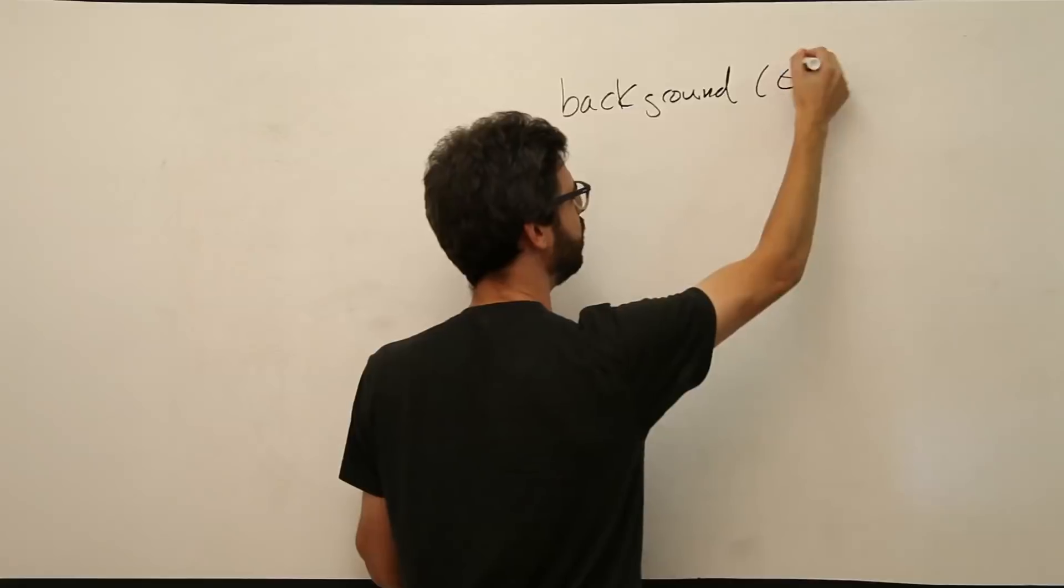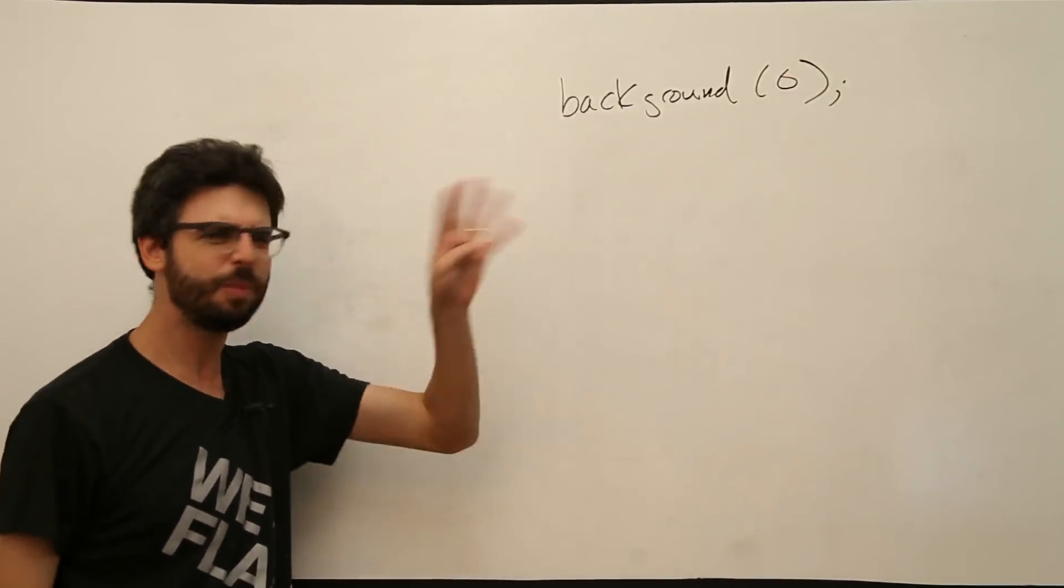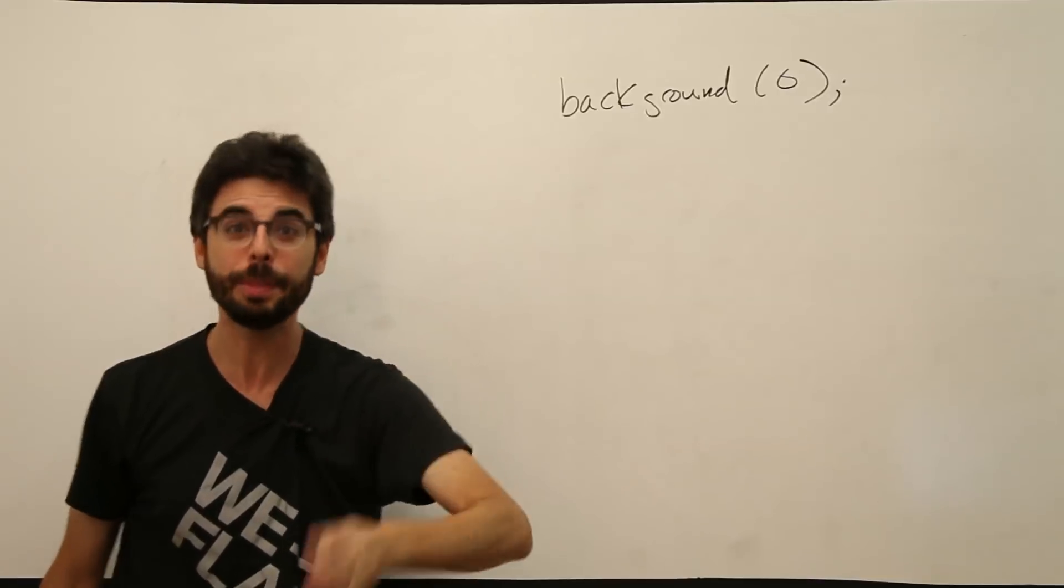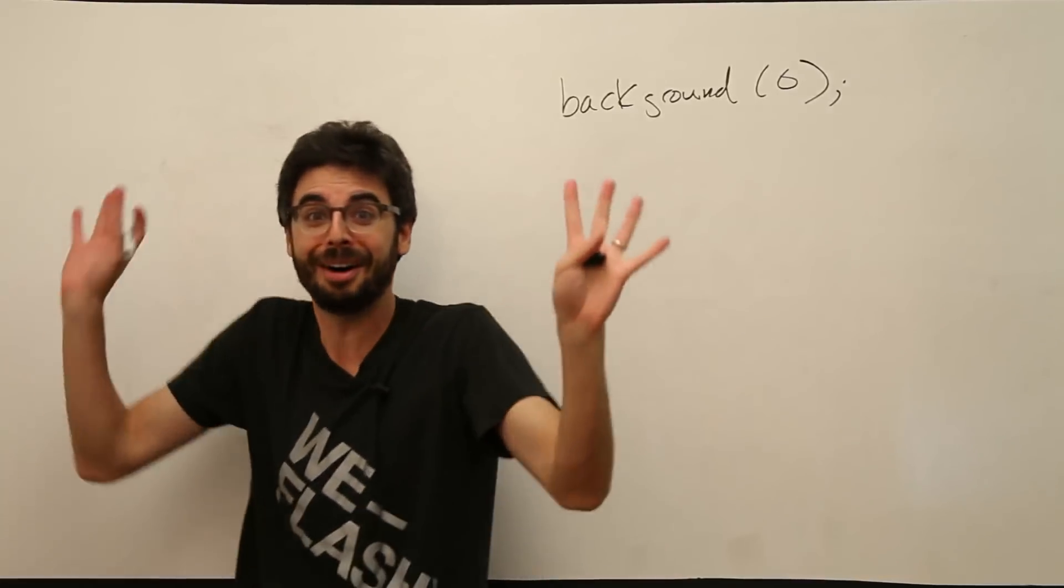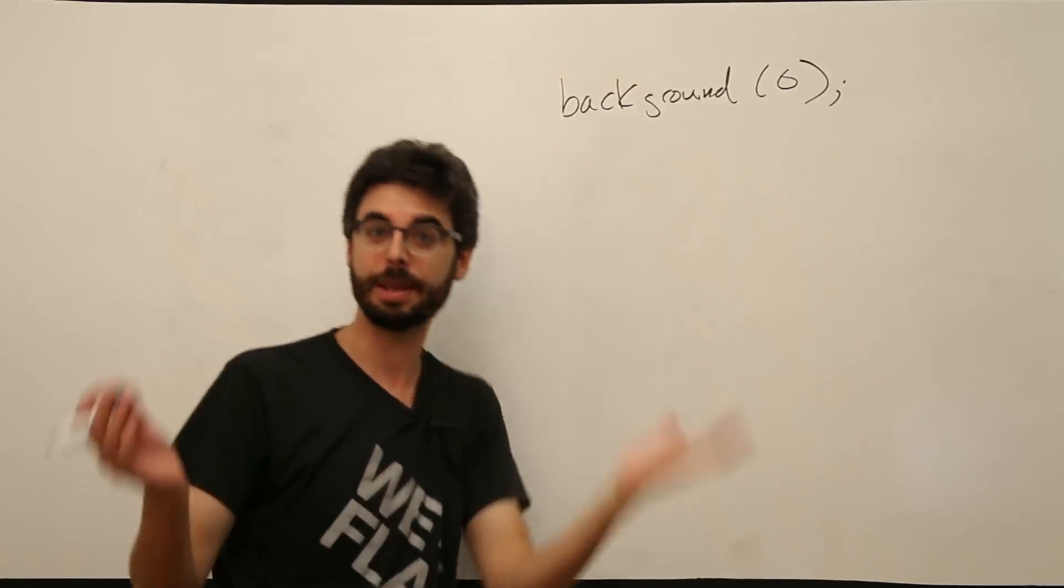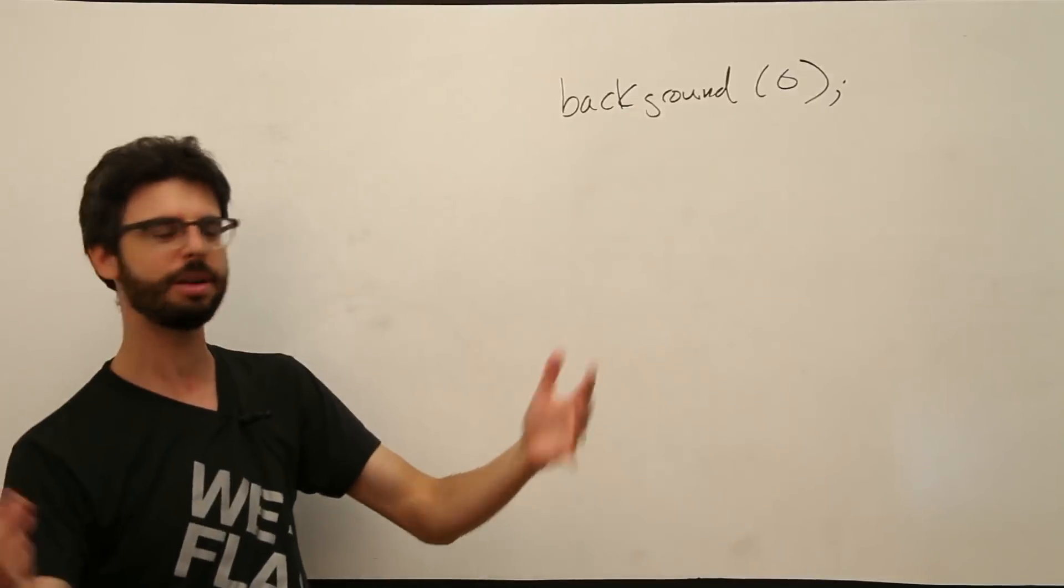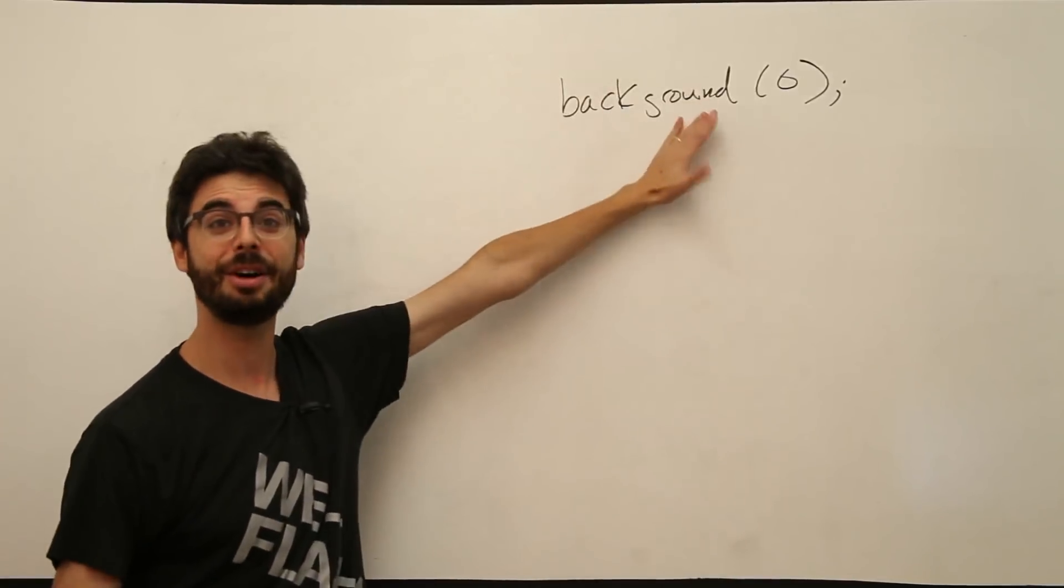In a simple little place where we just wrote something like this: background 0. This is us calling a function. At one point, we might have called it a command. But really, it's a function. We're calling a function. What function are we calling? It has the name background. It needs arguments. Maybe we say background 0 for a black background, 255, 0, 0 for a red background, etc. This is the function we're calling.